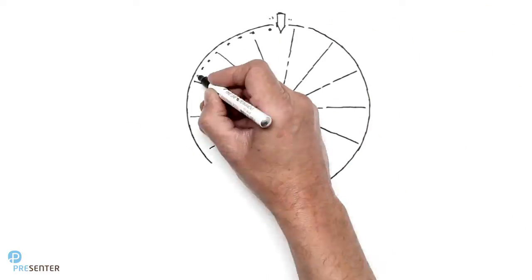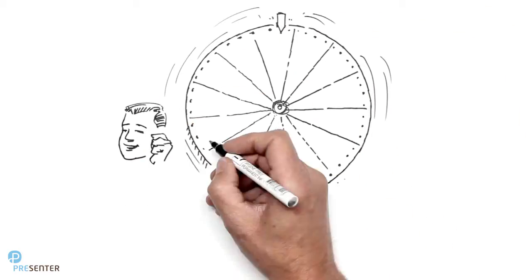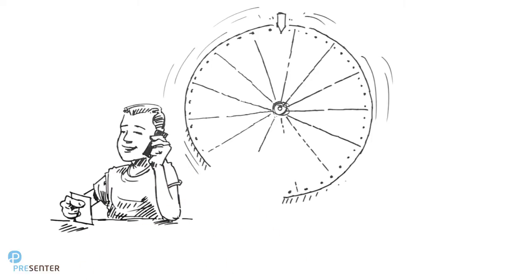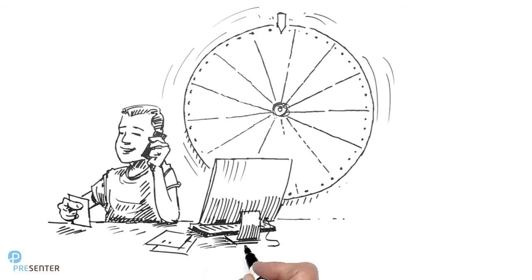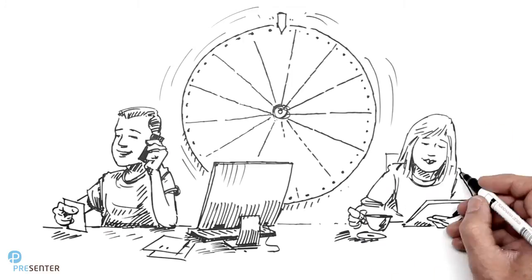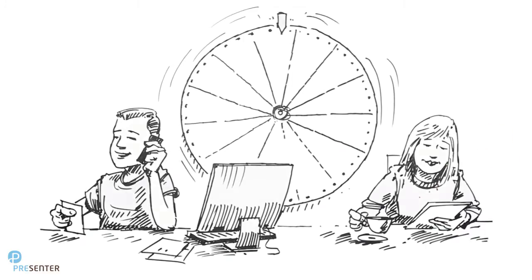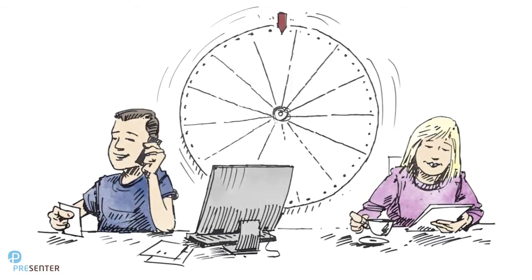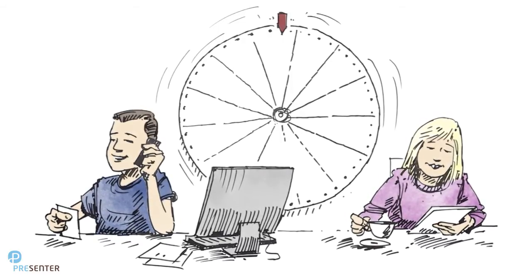After the baseline questionnaire has been completed, the randomization can start. The participants are randomly placed into either the intervention group or the usual care group. If possible, the participants are unaware of which group they're in. This is called blinding.